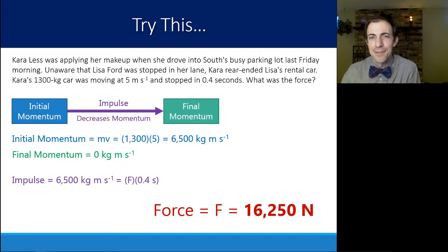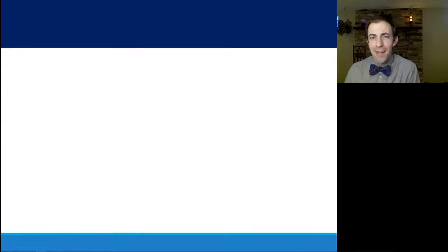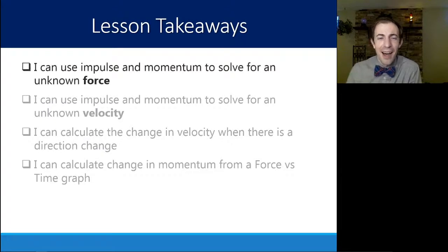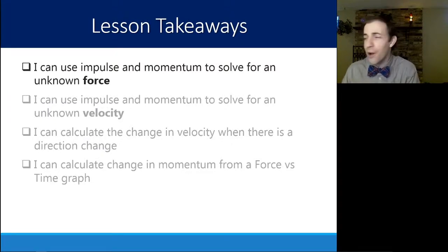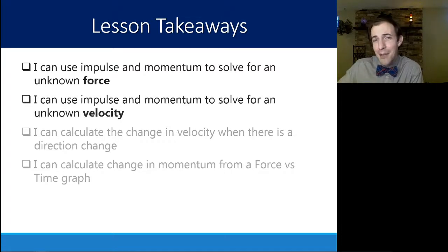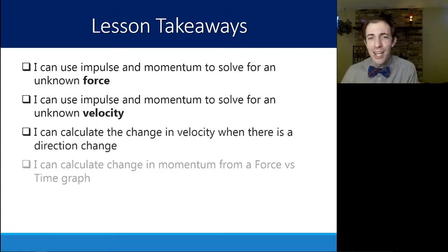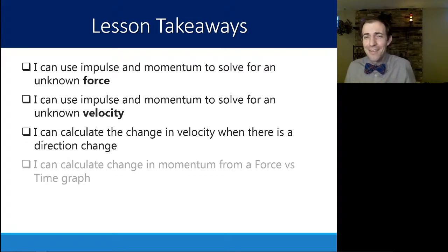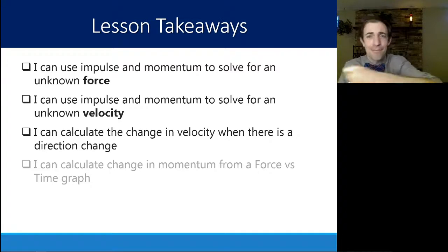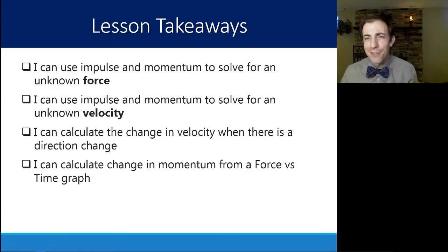From this lesson you should be able to: calculate an unknown force if you know the change in momentum; calculate how momentum changes given a force and time, and find an unknown velocity; calculate the change in velocity when there is a direction change, using positive/negative signs or factoring in the reversal; and calculate a change in momentum from a force-versus-time graph, as we did with the hamster rocket.